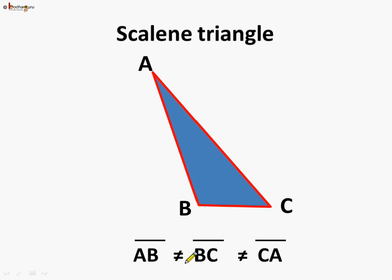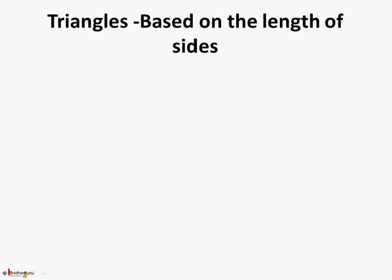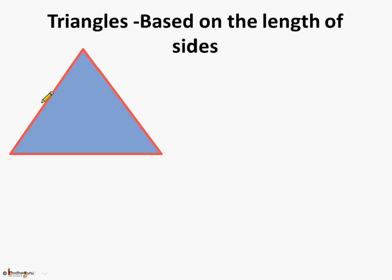Segment AB is not equal to BC, and it is not equal to segment CA. Even all the angles are not equal in a scalene triangle. Now you know there are different types of triangles based on the length of the sides. Here, all the sides are equal and this type of triangle is called an equilateral triangle — not only the sides, even the angles are equal.